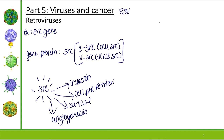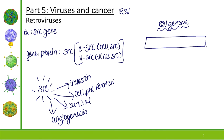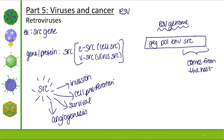When people looked at the RSV genome, Peyton Rous got pretty lucky because not all retroviruses are active or retain everything when they integrate. The RSV he worked with had all the pieces: GAG, POL, ENV, and also the SRC gene, which came from the host. We call this a viral oncogene. As viruses integrate and leave, many other viral oncogenes exist, and these viral oncogenes originated from the host cell.